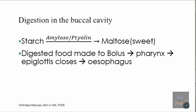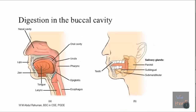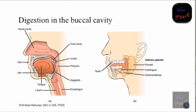Can you digest beef in your buccal cavity? No. So let's go to the next step. The food made into a bolus - a ball-like structure - will be moved to the back of the buccal cavity. In this photo you can see it moves to the back. There is something known as the uvula, which is important because it prevents the food from going up into the nasal cavity. Then the food moves to the pharynx.